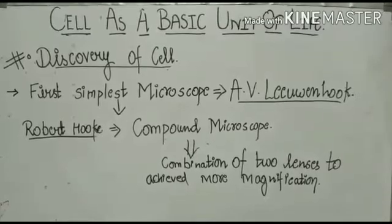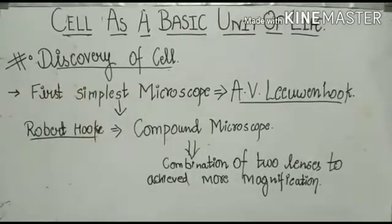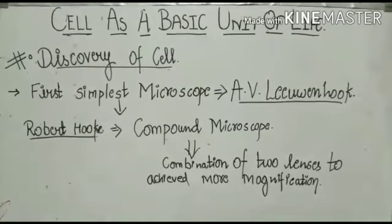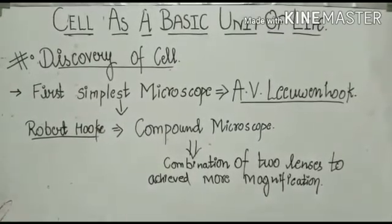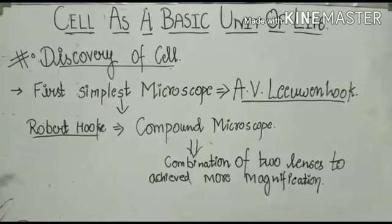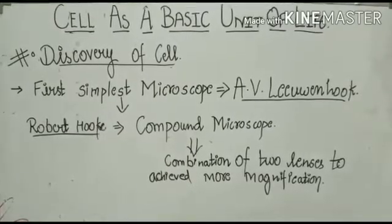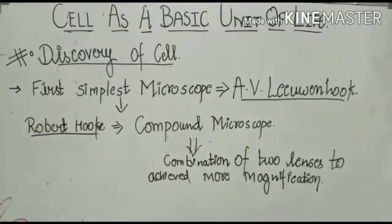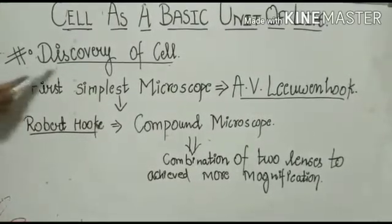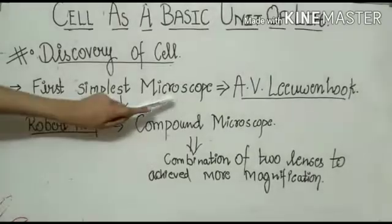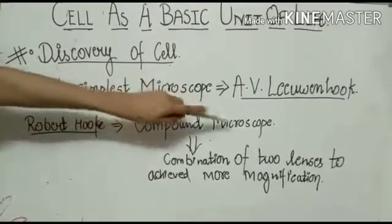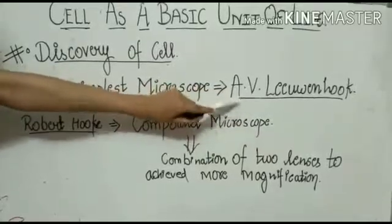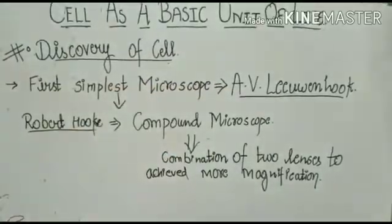We will talk about the discovery of the cell. The cell is such a thing which we cannot see with our naked eyes. So we need the microscope. The first simplest microscope was Antonie van Leeuwenhoek, in short AV Leeuwenhoek.